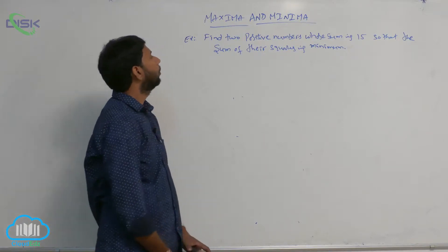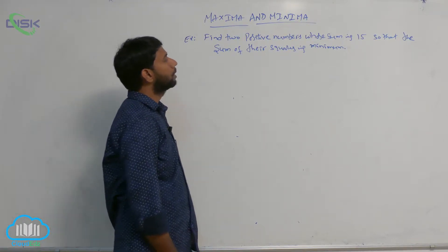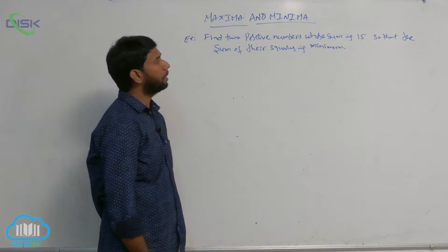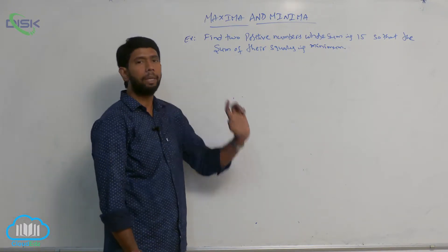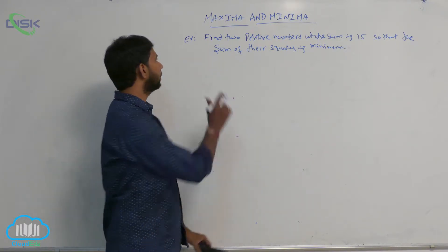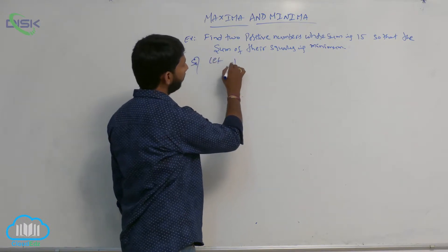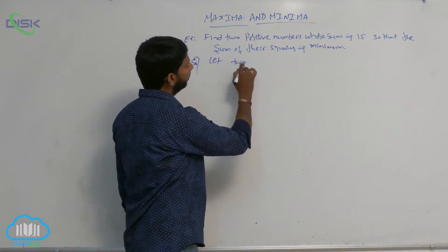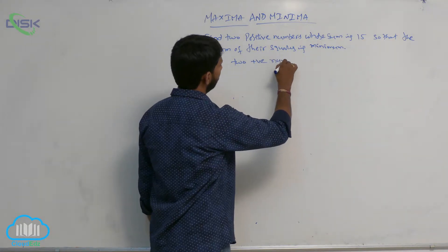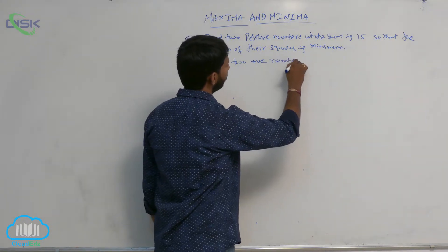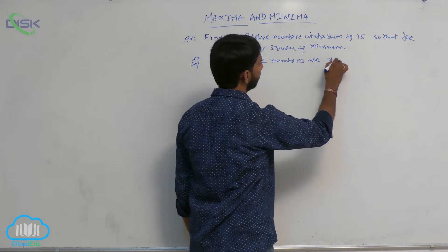The next example is: find the two positive numbers whose sum is 15, so that the sum of their squares is minimum. Let the two positive numbers be considered as x and y.